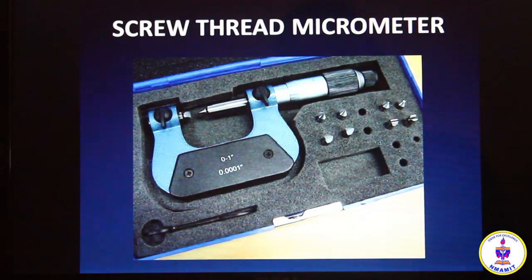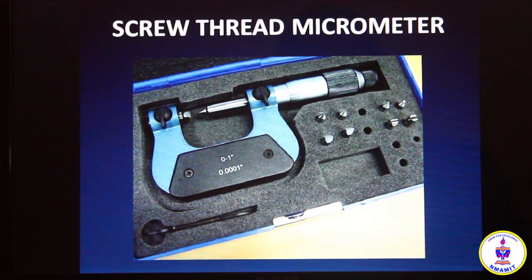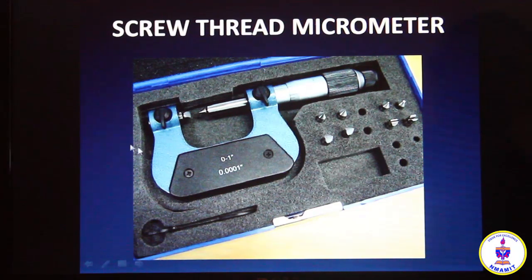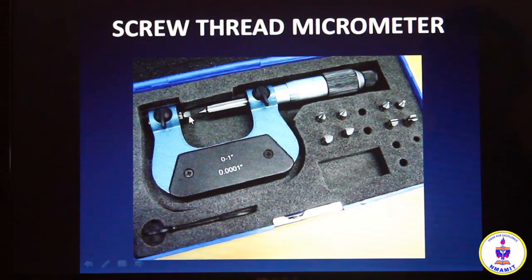Today we will discuss the screw thread micrometer, one of the instruments used to measure the effective diameter of a thread. You can see a screw thread micrometer here. This screw thread micrometer comes with changeable anvils — it has a V anvil of generally 60 degrees and a conical anvil.